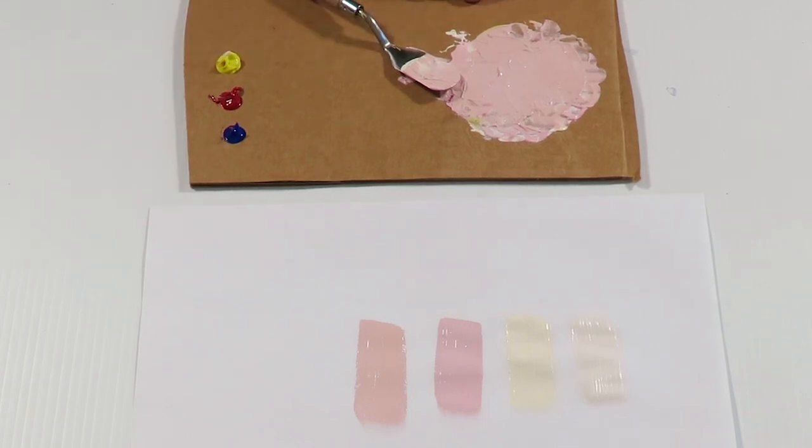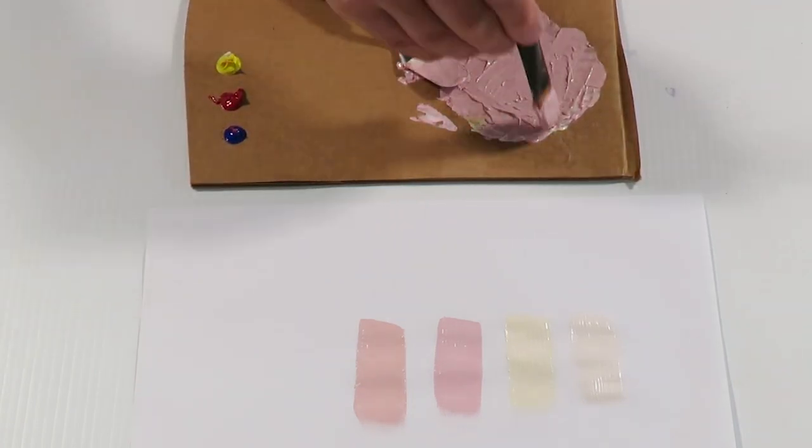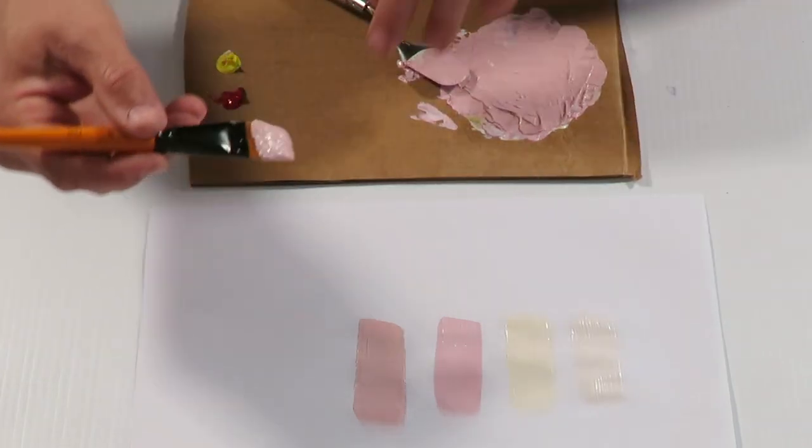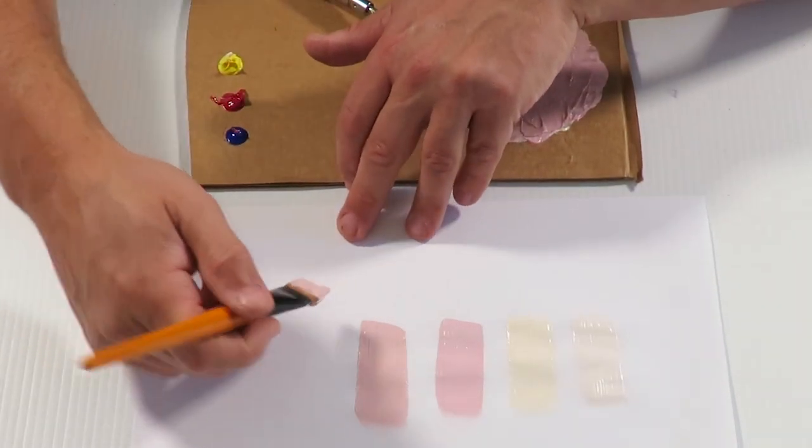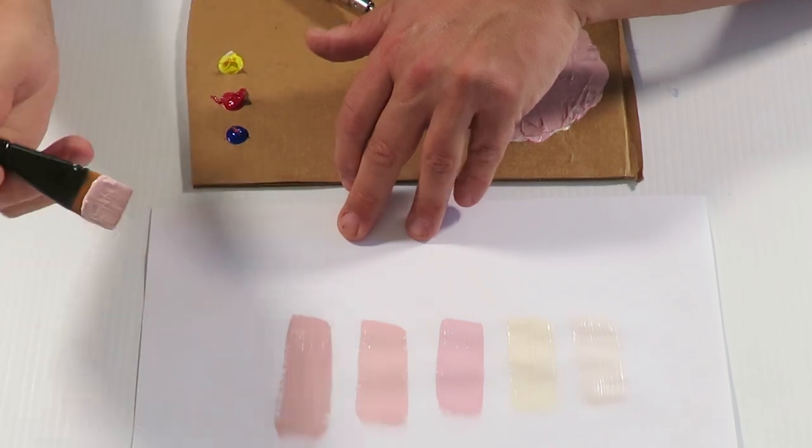Let's see if we can go a little bit darker again. I'll add a little bit more red and blue, and just a dab of yellow. It's really darkened it up. Paint that on the paper so you can see what it looks like. There we go.